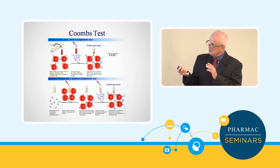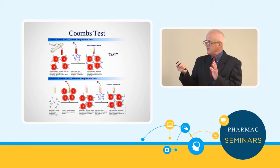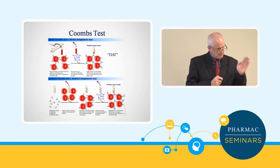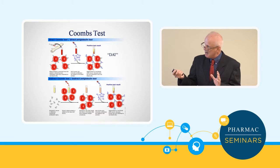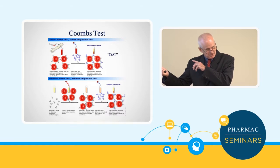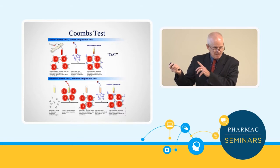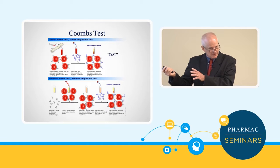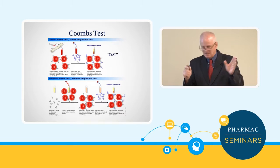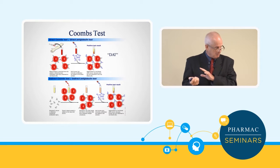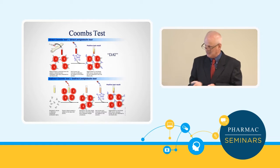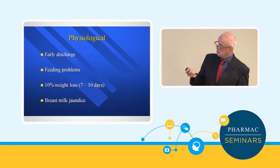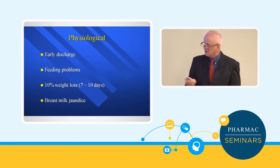You need enough antibodies attached to antigen sites for the Coombs test to become positive. In an ABO situation where the mother is group O and the baby is A or B, the antigen sites aren't quite as well developed, so there may not be enough antibodies attached to make the Coombs test positive — but there is still hemolysis happening. So if the mother is O and the baby is A or B and jaundiced, it can still be rampant hemolysis even though the Coombs test is negative.